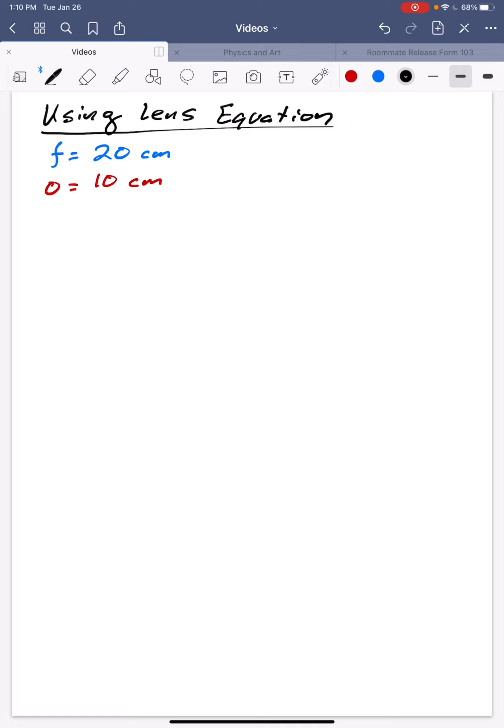The first step I usually do is draw a picture. So I just put the optical axis here and then I say, alright, I've got a lens. There's my lens.